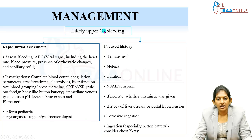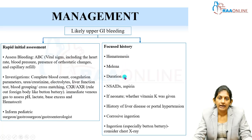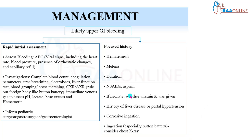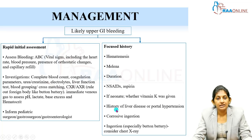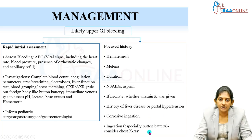Then take a focused history. Ask the parents about the hematemesis — quantity if they can quantify, nature, whether there was melena, and how long it has been going on. Ask about drug history — is the child taking NSAIDs like aspirin? If it is a neonate presenting with bleeding on day 7 to day 10 — classic HDN — ask whether vitamin K was given at birth. Our number one concern is portal hypertension or liver disease presenting with esophageal varices, so ask for history suggestive of liver disease, portal hypertension, corrosive ingestion, or button battery ingestion.